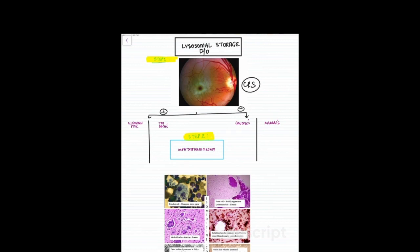If there is, there can be only two possibilities. Either it's Niemann-Pick disease or Tay-Sachs disease. And if there is no cherry red spot, then either it's Gaucher's disease or Krabbe's disease.